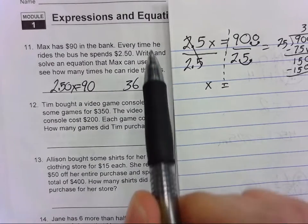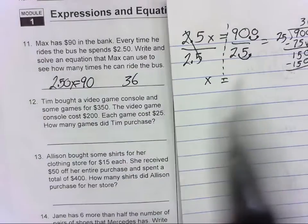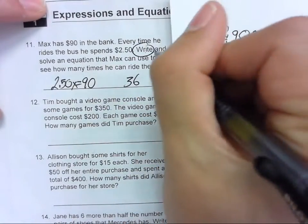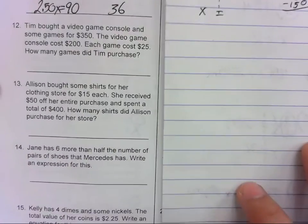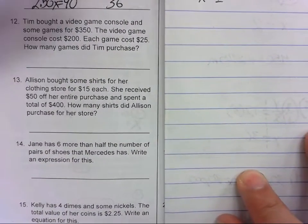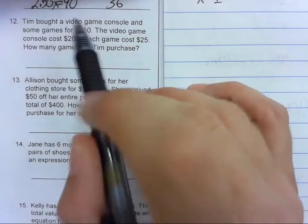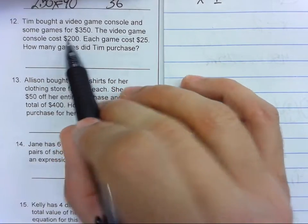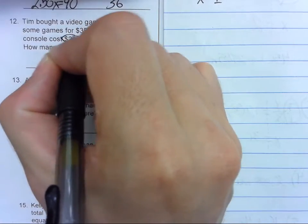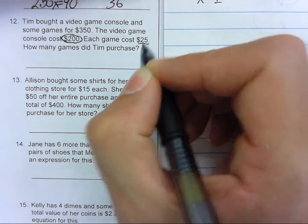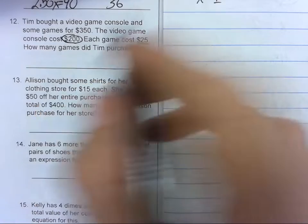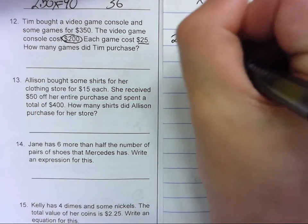You need both of those on the answer line though, because you need to write and solve, so both of those have to be there for credit. Problem 12: Tim bought a video game console and some games for $350. The video game console costs $200. Each game cost $25. How many games did he purchase? So you only buy one console, so $200.